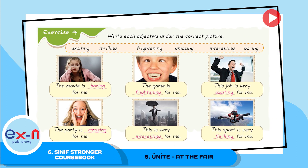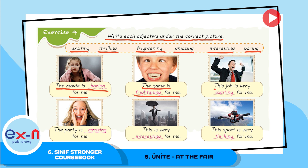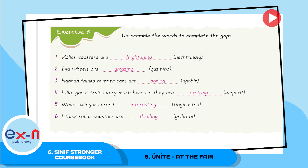Exercise 4: Write each adjective under the correct picture. The adjectives are: exciting, thrilling, frightening, amazing, interesting, boring. For example: the movie is boring for me; the game is frightening for me; this job is very exciting for me; the party is amazing for me; this is very interesting for me; this sport is very thrilling for me.